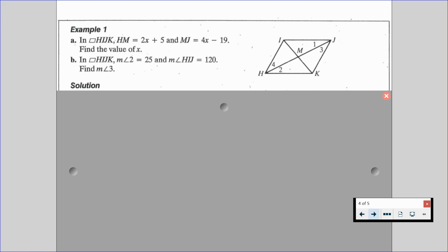For part B, we're asked in parallelogram HIJK, the measure of angle 2 is equal to 25 degrees, and the measure of angle HIJK is equal to 120 degrees. And we want to find the measure of angle 3.